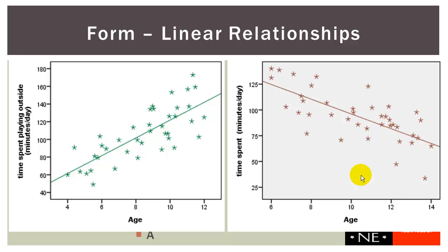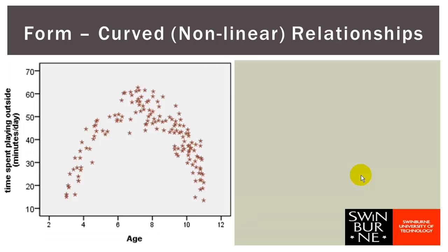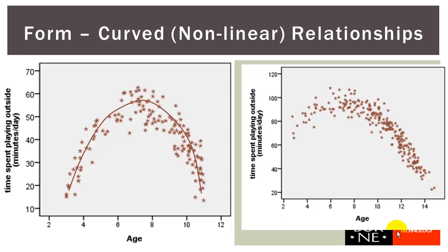Both of the relationships we have looked at could be represented by a straight line — we call these linear relationships. But not all relationships are linear. What if the relationship between age and time spent playing outdoors showed a distinct curve? It starts off for children aged three to about seven where older children tend to spend more time outdoors, but then from seven to eleven the older children tend to spend less time playing outside. We call this a non-linear relationship, and to represent it we would need a curve. This is what we mean when we talk about the form of the relationship — does it show some curve or non-linear component?